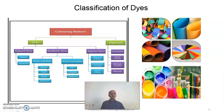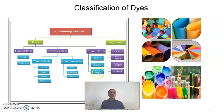The examples for water-soluble dyes are direct dyes, acid dyes, basic dyes, and reactive dyes. Examples for water-insoluble dyes are vat dye, sulphur dye, and dispersed dyes. In ingrained dyes, there are mineral colours, oxidation colours, and azoic colours — these colours come under ingrained dyes.